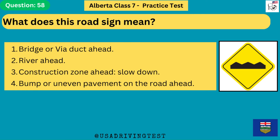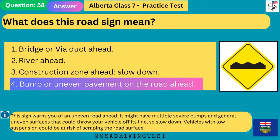What does this road sign mean? 1. Bridge or viaduct ahead. 2. River ahead. 3. Construction zone ahead, slow down. 4. Bump or uneven pavement on the road ahead. The answer is 4: bump or uneven pavement on the road ahead. This sign warns you of an uneven road ahead — it might have multiple severe bumps and general uneven surfaces that could throw your vehicle off its line, so slow down. Vehicles with low suspension could be at risk of scraping the road surface.